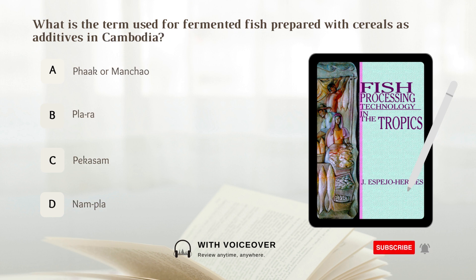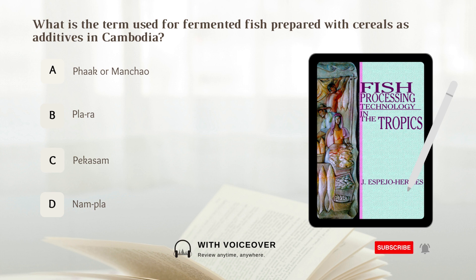What is the term used for fermented fish prepared with cereals as additives in Cambodia? A. Pak or manchao. B. Plara. C. Pekasam. D. Nampla. Answer: A. Pak or manchao.